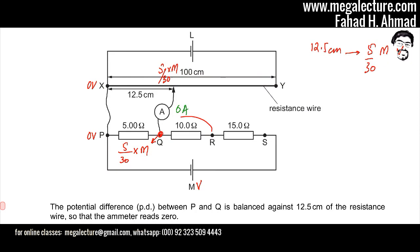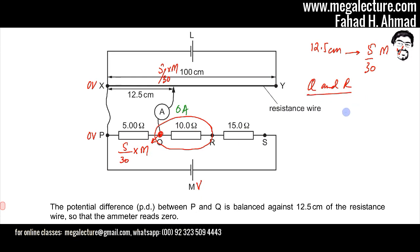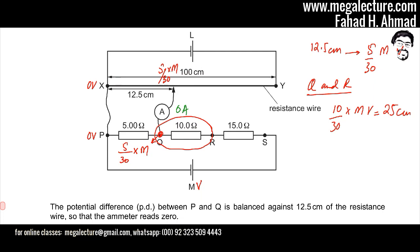For the 10 ohm resistor, the voltage between Q and R is (10/30)mVolt. This is double the voltage for the 5 ohm resistor, so it corresponds to double the length: 25 centimeters on the wire. Since 12.5 cm corresponded to (5/30)mVolt, 25 cm corresponds to (10/30)mVolt.